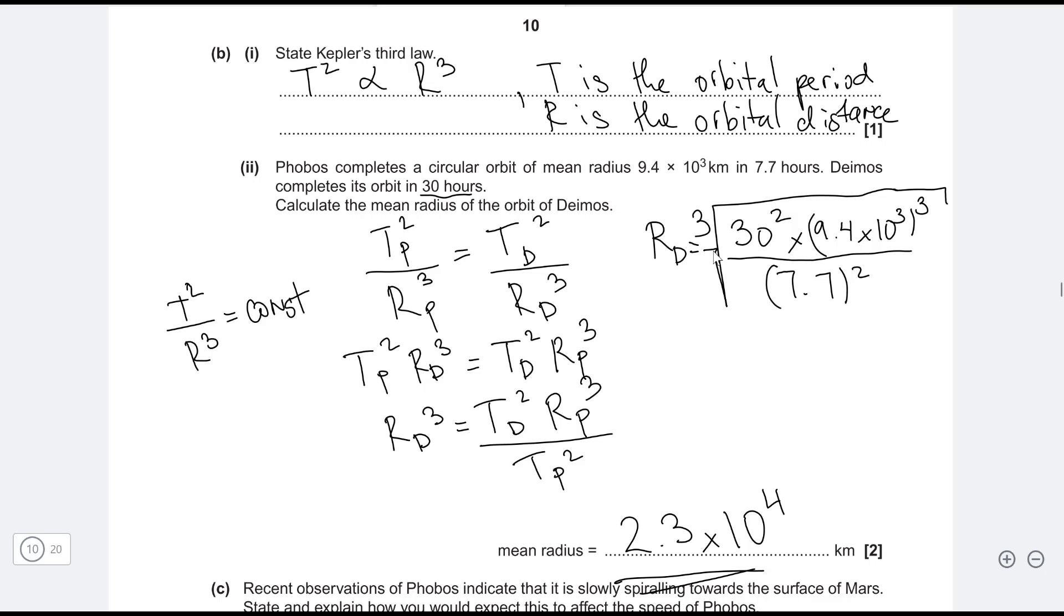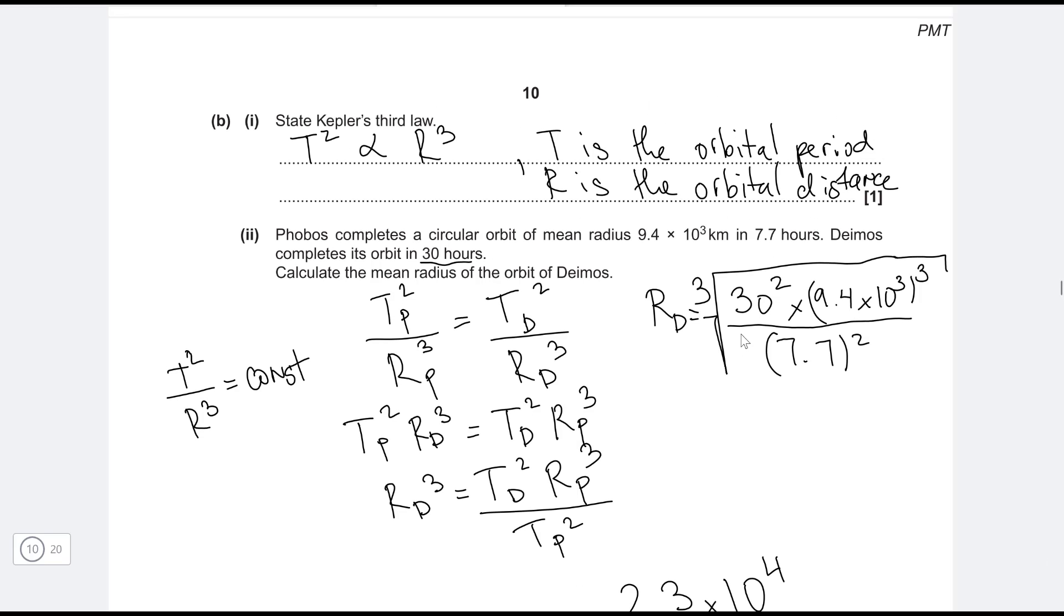So every time I'm writing this type of question, I'm really, really careful and being aware that I'm likely to, let's say, forget a square or forget a cube or forget a square root. But essentially, in Kepler's third law, because the equation says that t squared is proportional to r cubed, I'm going to have a lot of squares and cubes and cube roots, etc.